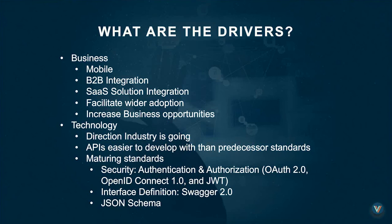On the technology side, APIs are the direction the industry is going. APIs are generally easier to develop with than predecessor standards like SOAP or EJBs — and if you think SOAP was hard, try CORBA or DCOM from before that. There are also maturing standards around APIs, especially for security, authentication, and authorization: OAuth, OpenID Connect, and JWT. In the realm of interface definitions, there's Swagger 2.0, which is a key component and Apigee Edge is built on top of that, and JSON schema.